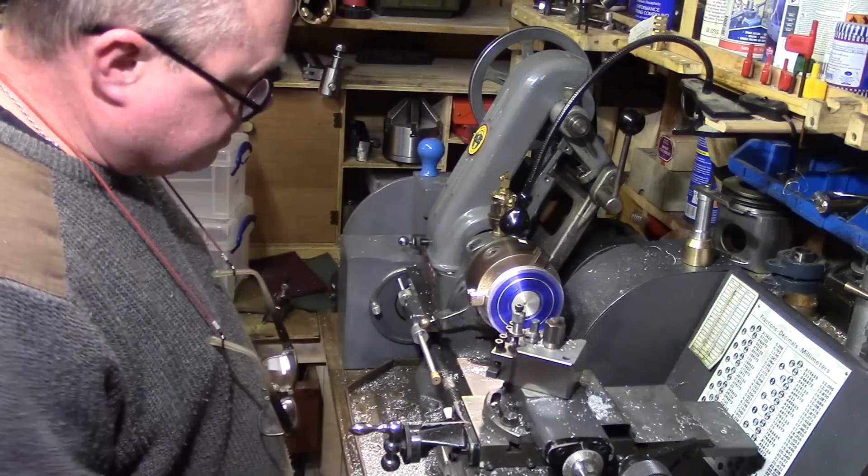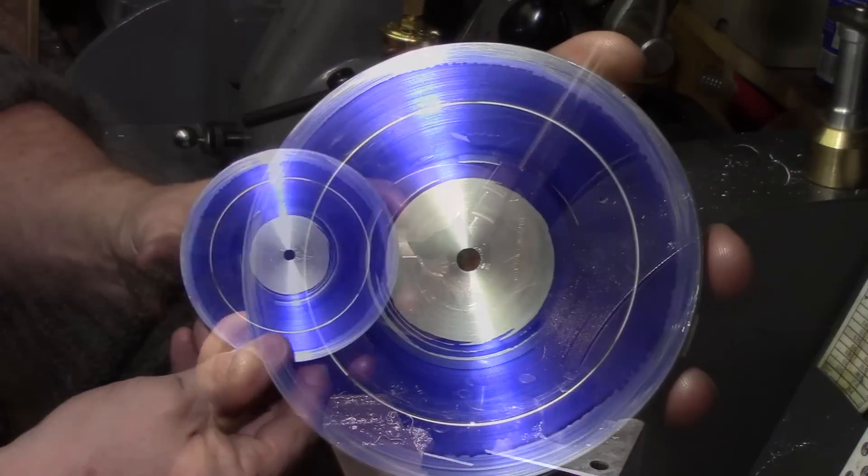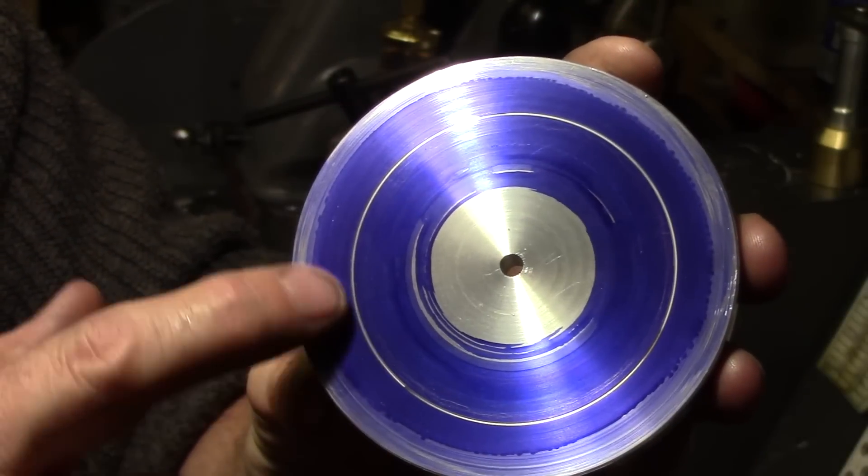Once complete, the job is removed from the chuck and I now have a nice groove all the way around the disc at exactly two and a half inches pitch circle diameter, ready for marking out my bolt hole circle with the dividers.